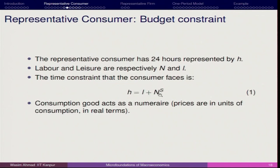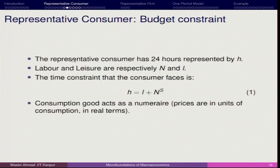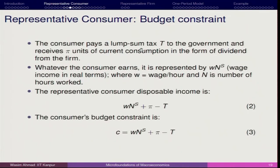The time constraint is L + N^s. Consumption goods act as the numeraire here because prices are expressed in units of consumption in real terms. We are talking about real wages and how changes in real wage impact consumption. When this agent supplies N^s hours, he or she earns some amount of income. This income from labor supply is added to the representative consumer's total income.